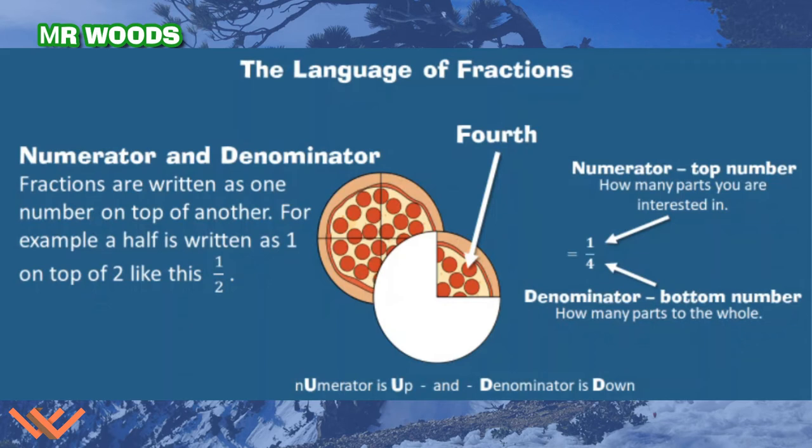Let's take a look at it with our pizza. So we have our pizza divided up. This pizza is into fourths. And we have one-fourth right here. So the numerator is the top number. How many parts you're interested in right here is one.